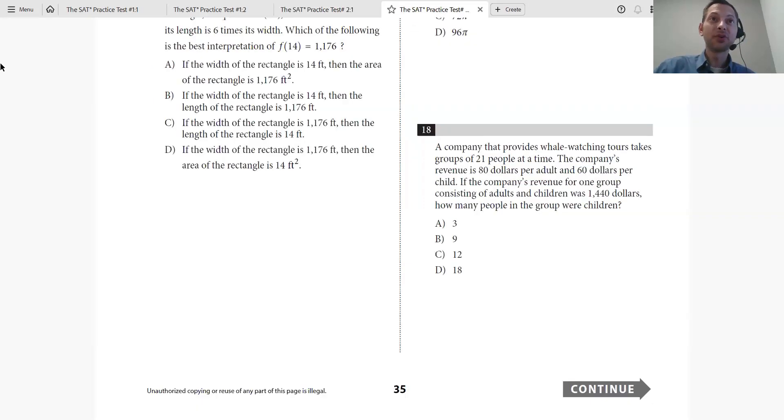The quiz of the day is question number 18. A company that provides whale-watching tours takes groups of 21 people at a time. The company's revenue is $80 per adult, $60 per child. If the company's revenue for one group consisting of adults and children was $1440, how many people in the group were children? If you can get this right, put it in the comments below and let me know if this was helpful. Really appreciate all your support. Like and subscribe and I'll see you in the next video.